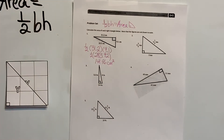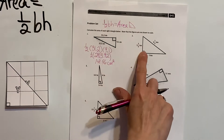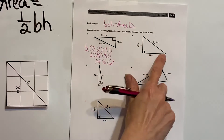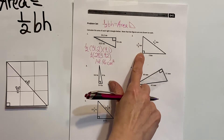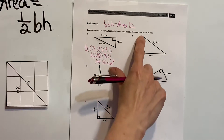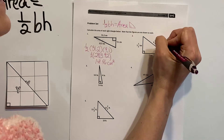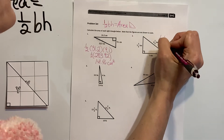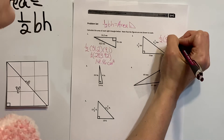For number two, we have the base and the height. The perpendicular line is right here, so we know this is the height. We set up: half of the base times the height.